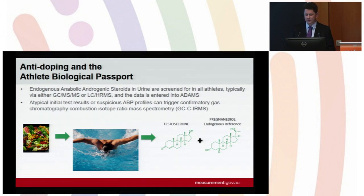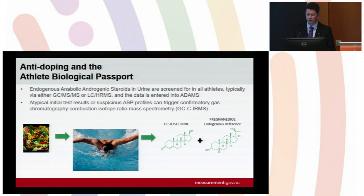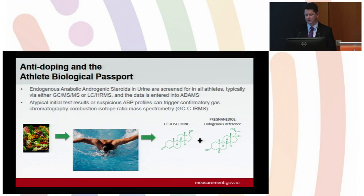Atypical or suspicious results can trigger confirmatory analysis including gas chromatography combustion isotope ratio mass spectrometry, GC-C-IRMS. The idea is that if you view an athlete's body as a generator of endogenous steroids as well as related compounds formed under the same metabolic pathways, then ideally the carbon isotope ratios of the endogenous reference compound compared to the steroid marker would be identical, and that would be a function of the athlete's diet.